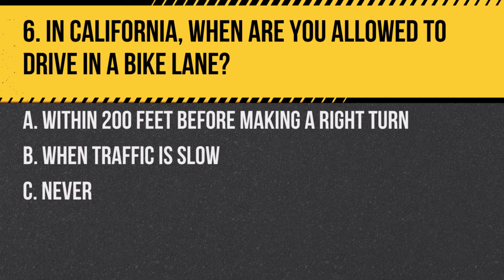Question 6. In California, when are you allowed to drive in a bike lane? a. Within 200 feet before making a right turn. b. When traffic is slow. c. Never. Answer: a. Within 200 feet before making a right turn. This is to allow for safe merging with bicycle traffic.